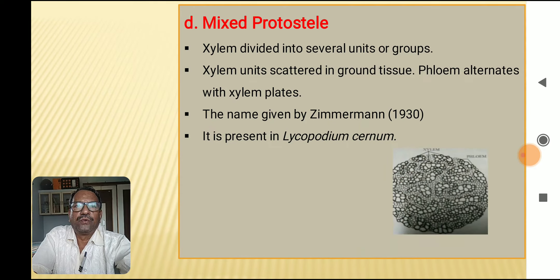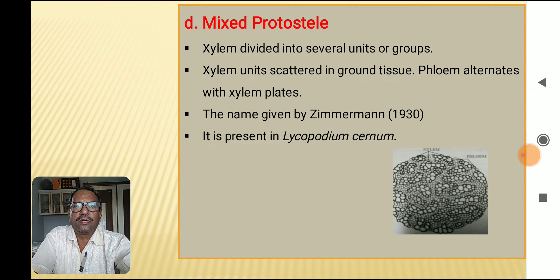The fourth type is mixed protostele. The xylem is divided into several units or groups, scattered in a ground tissue, and phloem alternates with xylem plates. The name was given by Zimmermann in 1930. It is present in Lycopodium selago.